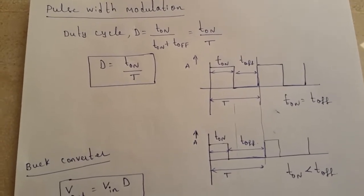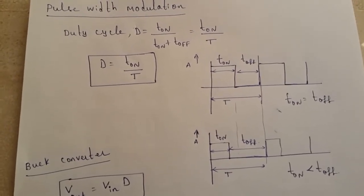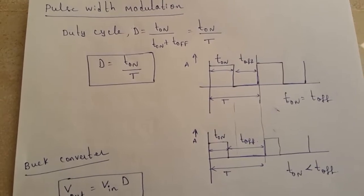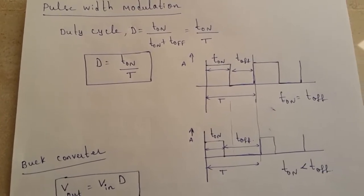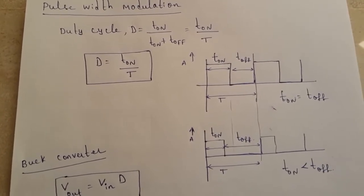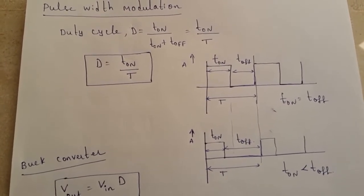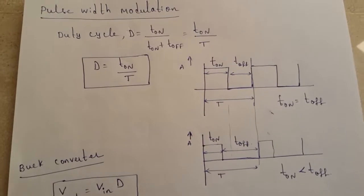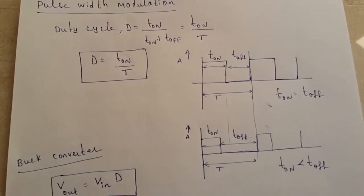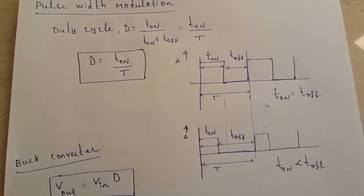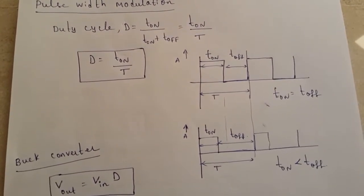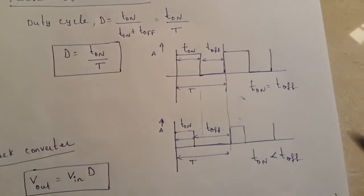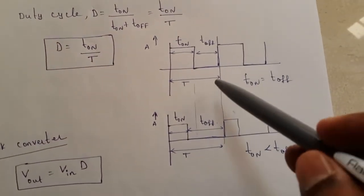In PWM, that is pulse width modulation, the controlling parameter is the duty cycle D, which is defined as T_on divided by (T_on plus T_off), which is equal to T_on divided by T. So the duty cycle D equals the on-time divided by the total time period. This is the waveform.